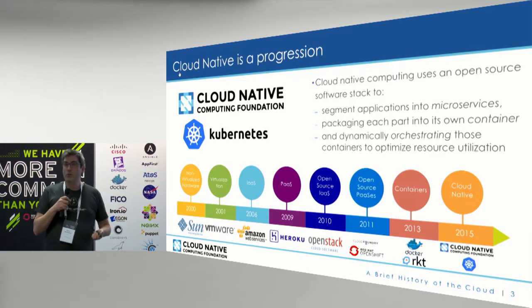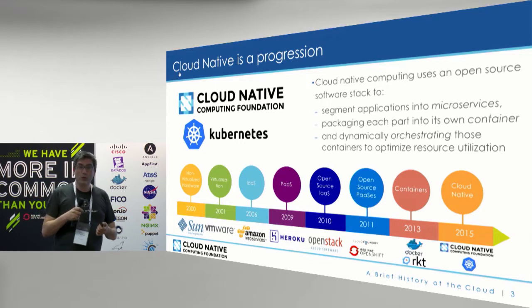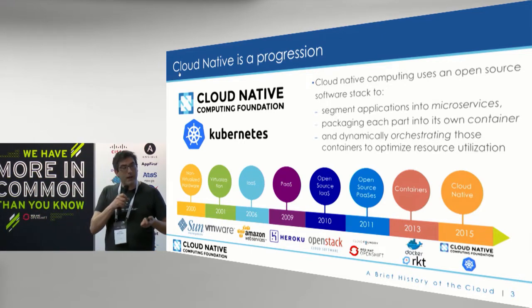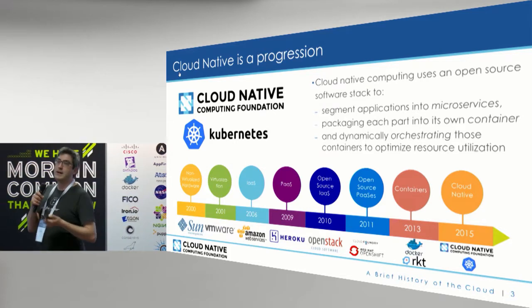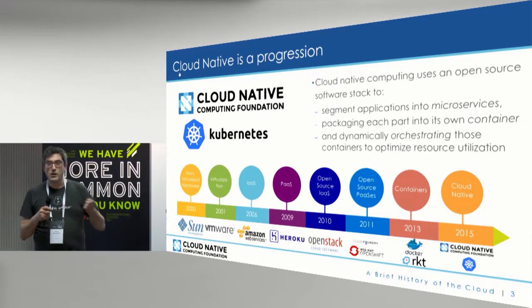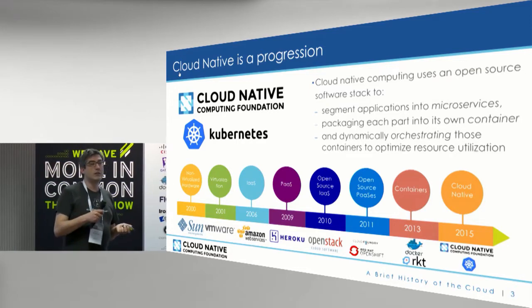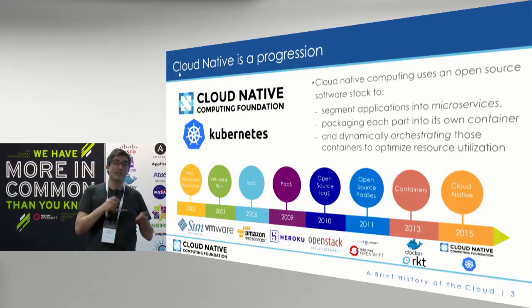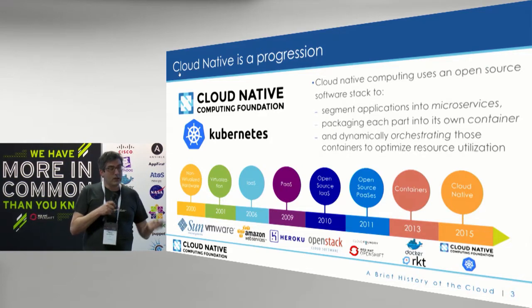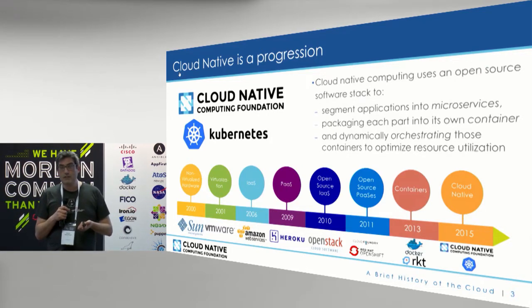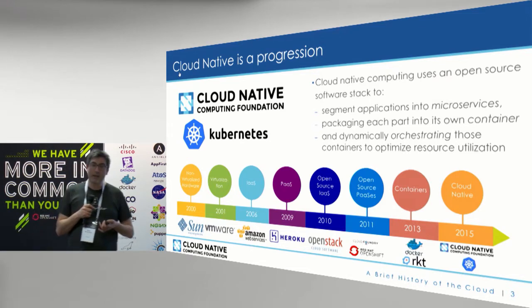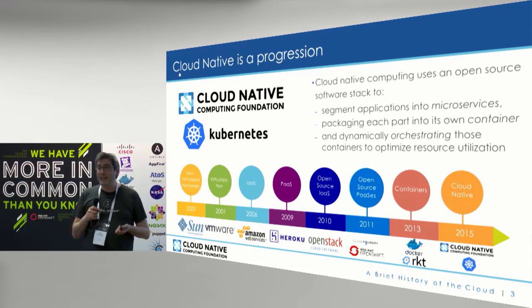And then you have containers, where Docker — or dotCloud as it was called — wanted to make a PaaS too. They found they couldn't make that work as a business. But along the side, they'd taken LXC, the container model from Linux, which had become really good by then, and made it into something they could use for their daily 24/7 deployments as DevOps people. And they thought, what if we just use this? Maybe other people would like it too. They talked about it at a conference, and suddenly everyone went crazy.